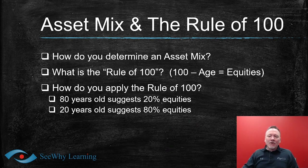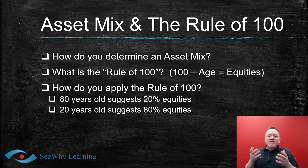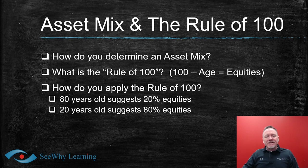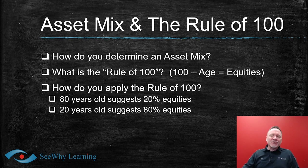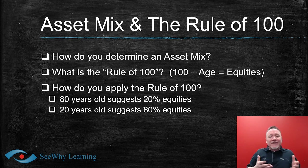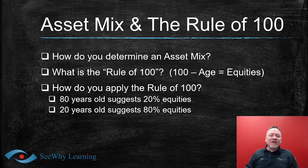There are many ways of determining an asset mix for a client: the age approach, the life cycle approach, mean variance optimization, and more. We're going to focus on one method. Whatever asset mix is agreed upon, KYC — know your client — requires that it be suitable for the client in terms of risk tolerance, investment objectives, time horizon, and so on. For example, it might be suitable for a working professional to have a 60-40 split of equities and fixed income, but the advisor must use their own common sense and professional judgment for each client's situation.